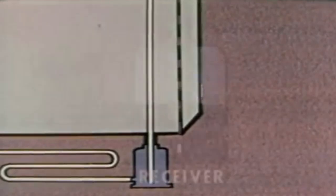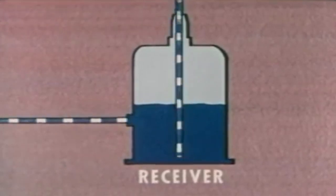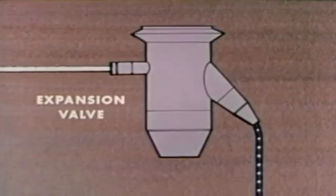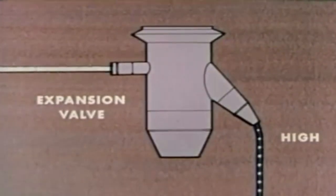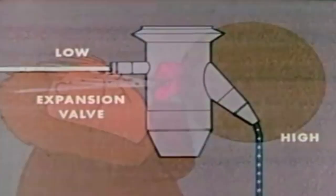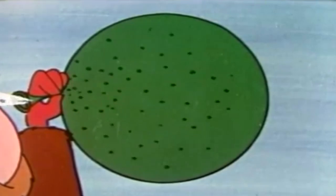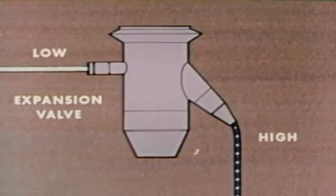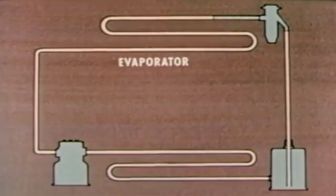Now, let's see how a refrigerator works. We'll begin at the receiver, where the excess refrigerant is stored. It is in the liquid state and under high pressure. The high pressure forces the refrigerant through the liquid line to the expansion valve. This valve causes a pressure drop — the high pressure liquid becomes a low pressure liquid. This is like letting air slowly out of a balloon. The air that gets through expands and its pressure drops. In the same way, refrigerant that passes through the expansion valve expands and its pressure drops. The low pressure refrigerant then flows into the evaporator.